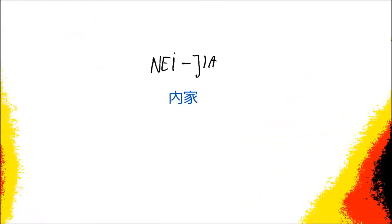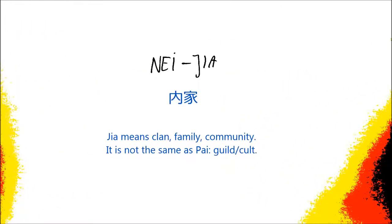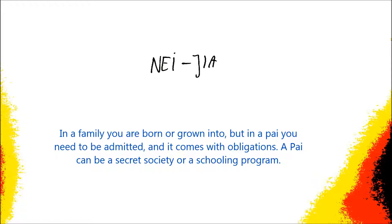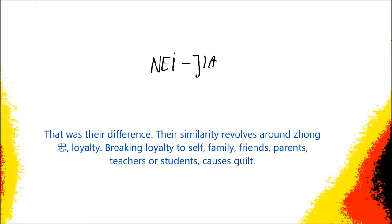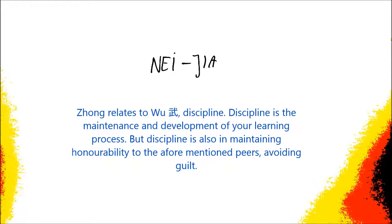We have to start somewhere, so we will start with Nei Jia. Nei Jia in itself is a complicated term, even though it seems very easy. The most common translation of Nei Jia is 'internal arts,' but in fact that translation is wrong. It is not 'internal martial arts' or anything like this. Nei Jia literally just means 'internalizing family,' and this is basically what it explains: it is the family of practices that are helping you to internalize.